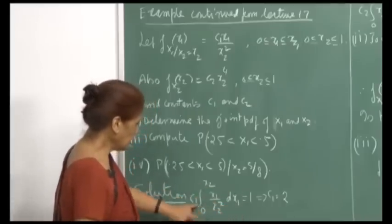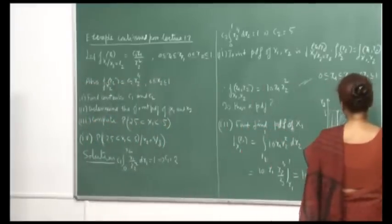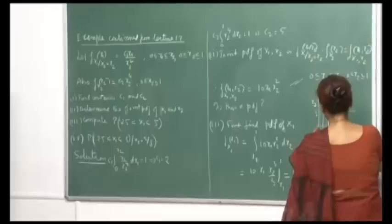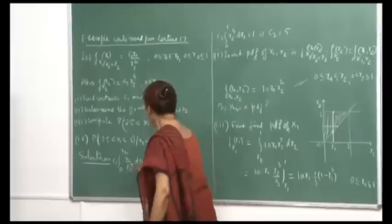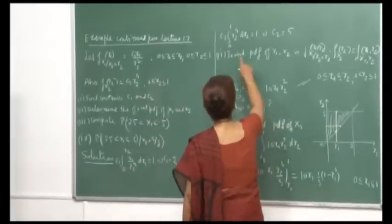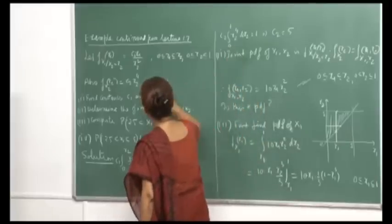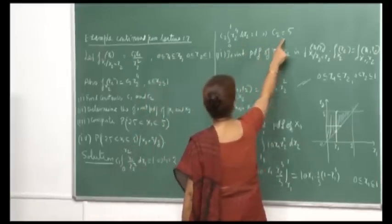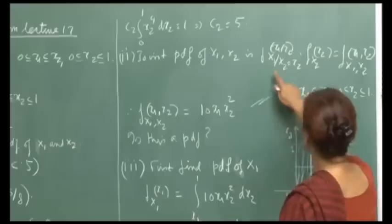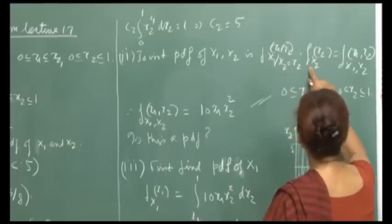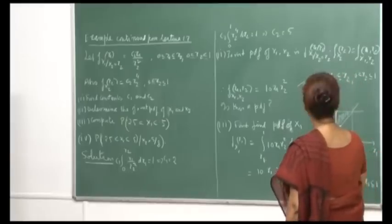By saying that the integral from 0 to x2 equals 1, because given an x2, when you draw this, x1 will vary from 0 to x2 since this is the region of integration. So the integral from 0 to x2 of this equal to 1 implies c1 is 2. Similarly, by integrating the marginal of x2 from 0 to 1, this gives us c2 equal to 5. The joint PDF of x1 and x2 will be the conditional of x1 given x2 times the marginal of x2 — the product of the two, now that we have computed c1 and c2.